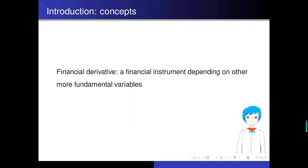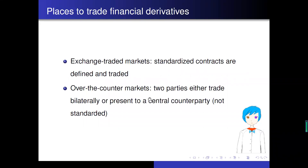First, we introduce the concept of financial derivatives. A financial derivative is a financial instrument depending on other more fundamental variables like stocks and other underlying assets. There are different places to trade financial derivatives — the two places are exchange-traded markets and over-the-counter markets.